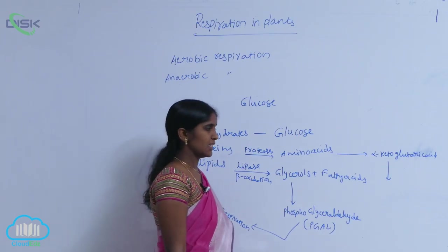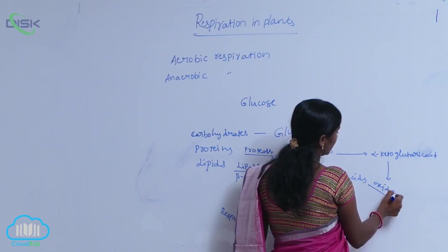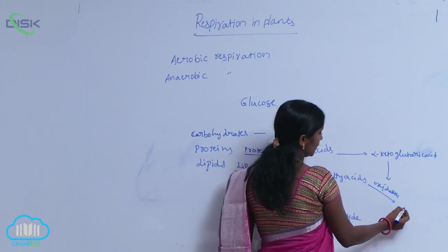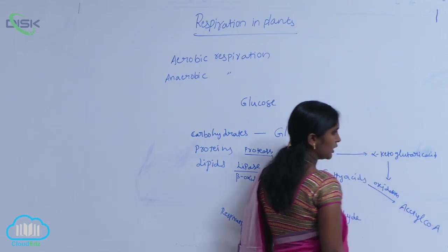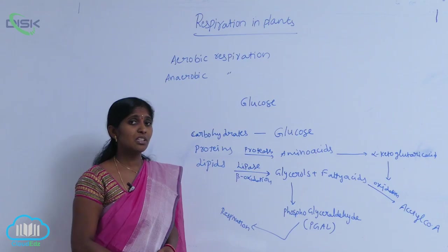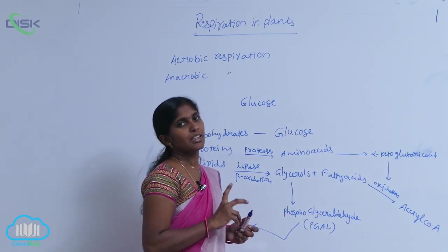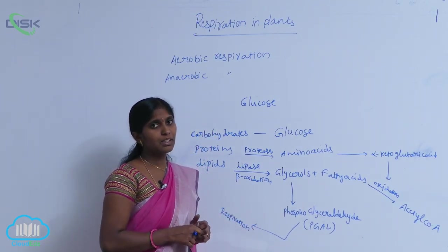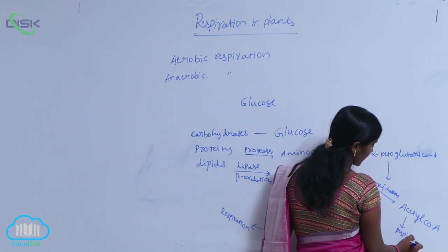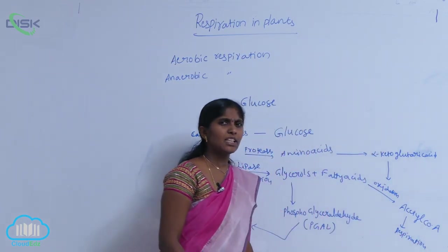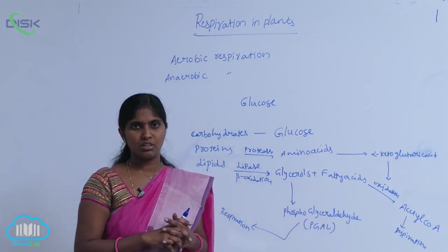The fatty acids are also involved in oxidation. Due to the oxidation reaction, fatty acids are converted into acetyl-CoA. This acetyl-CoA is an intermediate compound present in the Krebs cycle — the Krebs cycle is initiated by acetyl-CoA. So many respiratory substances are converted into simpler forms and then involved in respiration.